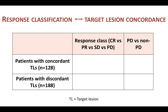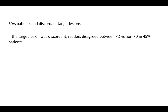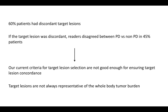When looking at response classification versus target lesion concordance, it was no surprise that the 40% of patients with concordant target lesions had pretty much concordant response classification as well. On the other hand, the 60% of patients with discordant target lesions — around 188 patients — had very poor response concordance, and only 55% of those patients had concordance in progression versus non-progression. Essentially, in this study, around 60% of patients had discordant target lesions, and in this category readers disagreed between PD and non-PD in as many as 45% of patients. This clearly showed that current criteria for target lesion selection as per RECIST 1.1 are not sufficient for ensuring concordance, and importantly the target lesions are not always representative of the whole body tumor burden.